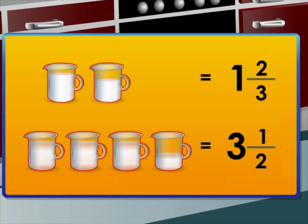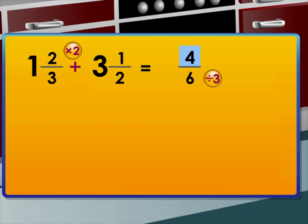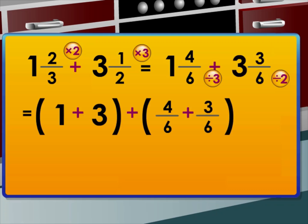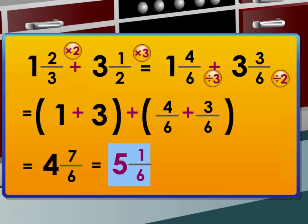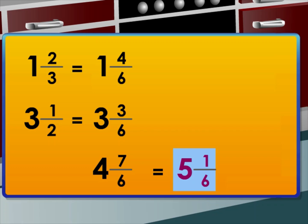Another method: combine the whole numbers and fractional parts separately. Find the same denominator for three and two, which is six. Six divided by three is two, and two times two is four, so it is one and four over six. Six divided by two is three, and three times one is three, so it is three and three over six. Now add the whole numbers: one plus three is four. Then the fractional parts give seven over six. The answer written as a mixed number in lowest terms is five and one over six. Mixed numbers can also be added in vertical form — arrange the fractions vertically, find the same denominator of six, then add vertically. You may apply any method you prefer in your exercises in class or at home.